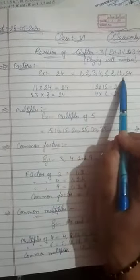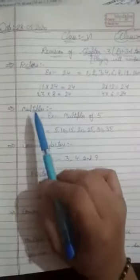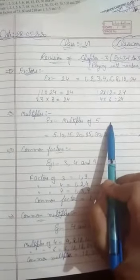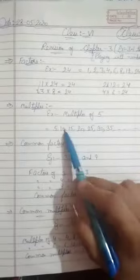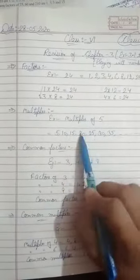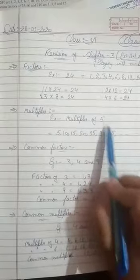Now our next topic is multiples. Suppose you want to find multiples of 5 or any other number. What should you do? Just write its table: 5 ones are 5, 5 twos are 10, 5 threes are 15, 5 fours are 20, 5 fives are 25, 5 sixes are 30, 5 sevens are 35, and so on.